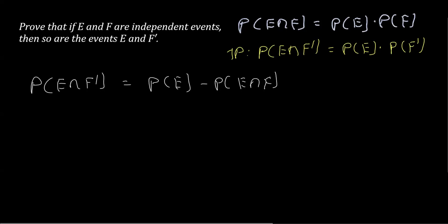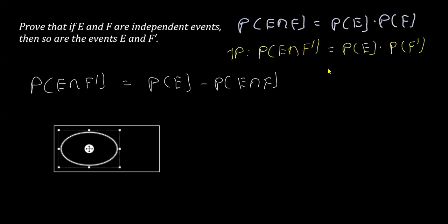Now if it is not clear, I can use a Venn diagram here to understand. Let's say I take this as event E, and I take another event, say F. Now I took this as E. As you can see, this is E and this is F, the blue one is F here.